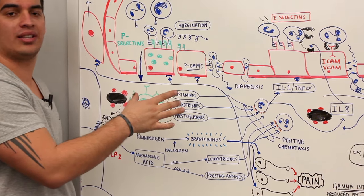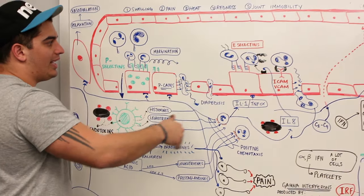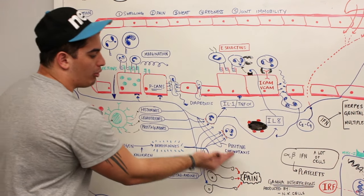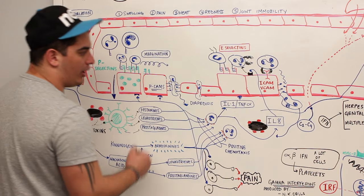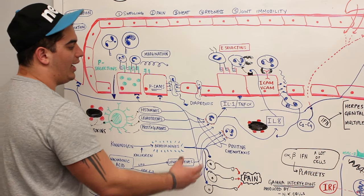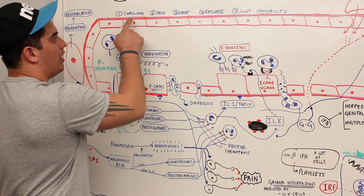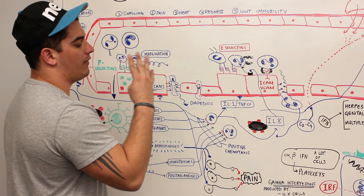They also act on endothelial cells causing contraction, which causes fluid to leak out and increases permeability. That fluid leaking out can compress pain receptors, and bradykinins can activate pain receptors inducing pain. The fluid exudate causes swelling. That covers swelling, pain, heat, and redness, which are the four cardinal signs of inflammation.